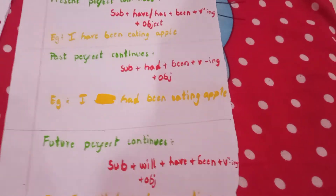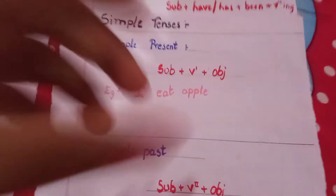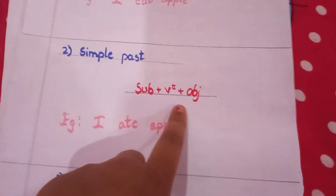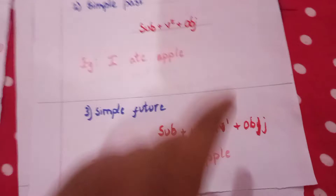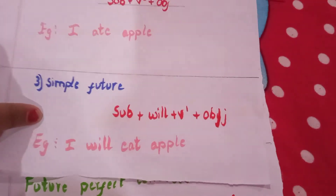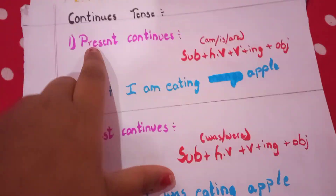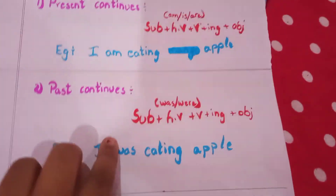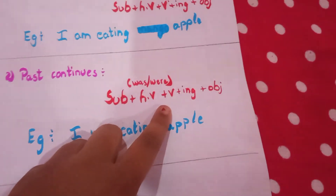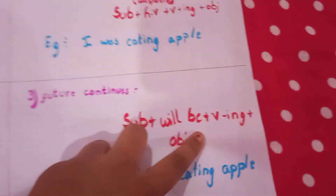Let's read the formulas again. Simple present: subject plus V1 plus object. Simple past: subject plus V2 plus object. Simple future: subject plus will plus V1 plus object. Present continuous: subject plus helping verb plus V4 plus object. Past continuous: subject plus helping verb plus V4 plus object. Future continuous: subject plus will be plus V4 plus object.